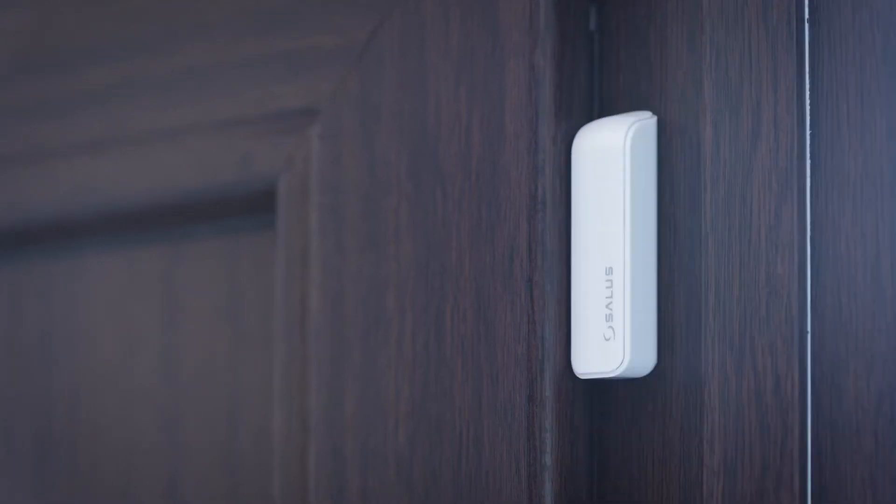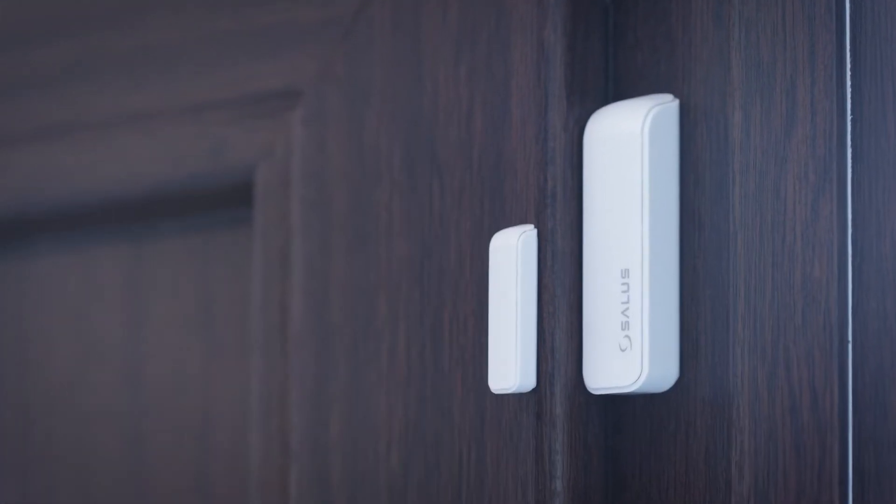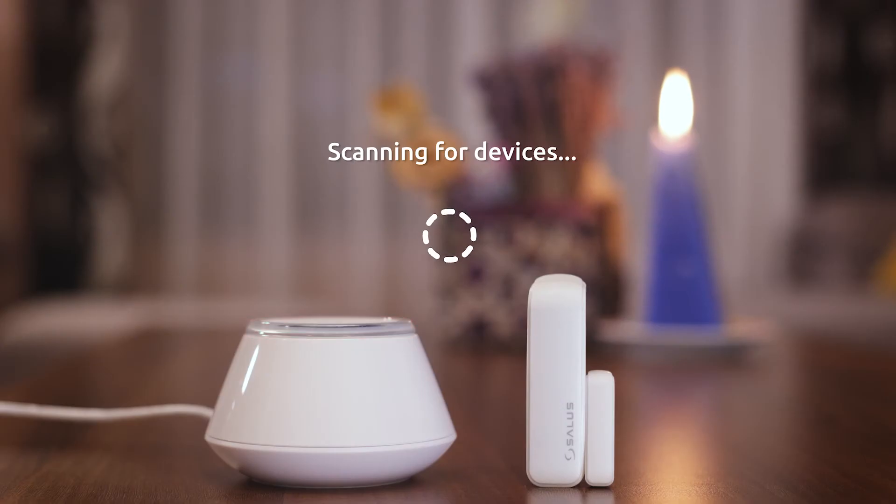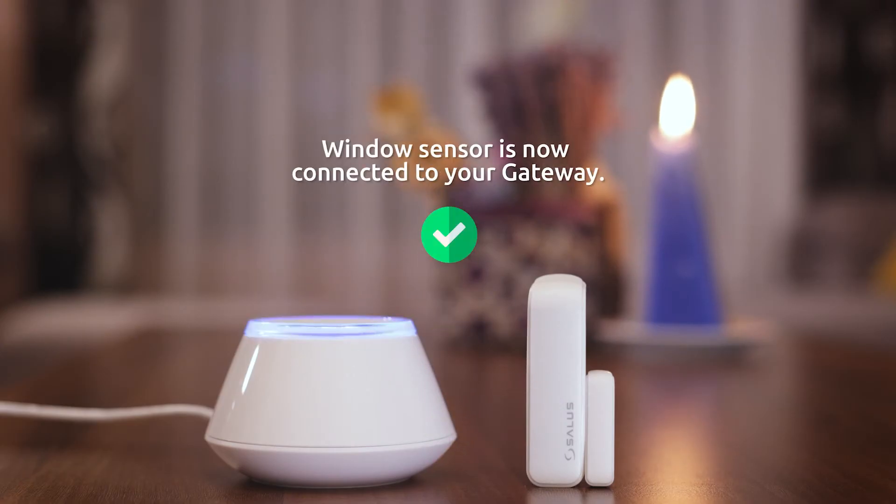The installation process is very straightforward. The sensor can easily be mounted to any type of window or door. Simply connect it to your universal gateway to enable its functionality.